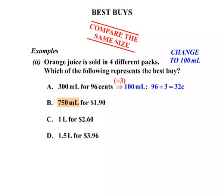The next one is 750ml. To break that down to 100ml we need to divide by 7.5. Think about it this way: if it were 700ml we'd divide by 7, if it were 800ml we'd divide by 8 — 750ml is right in the middle, so we divide by 7.5. The price is $1.90, but since we've been working in cents, that's 190 cents. 190 divided by 7.5 works out to be 25.3 cents.